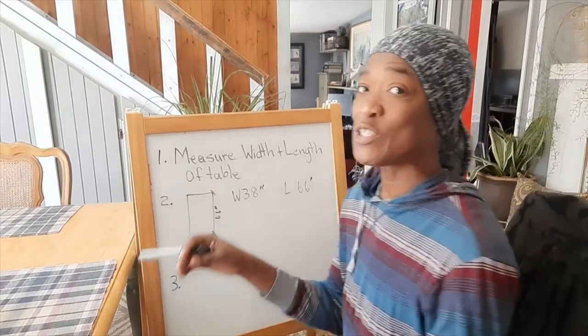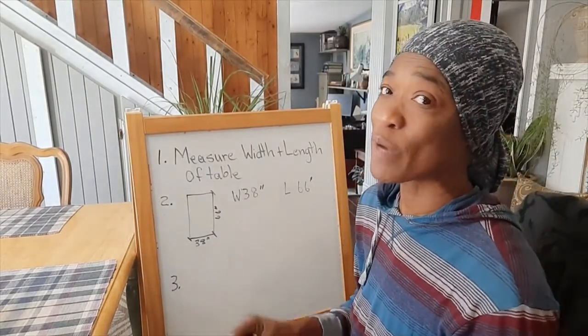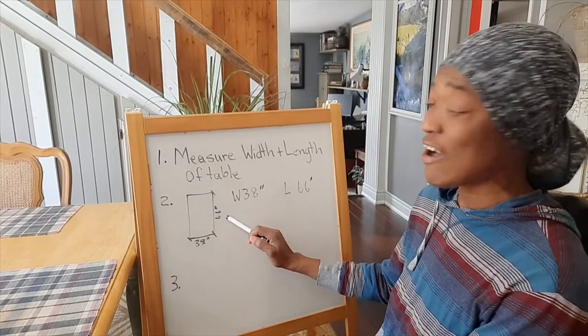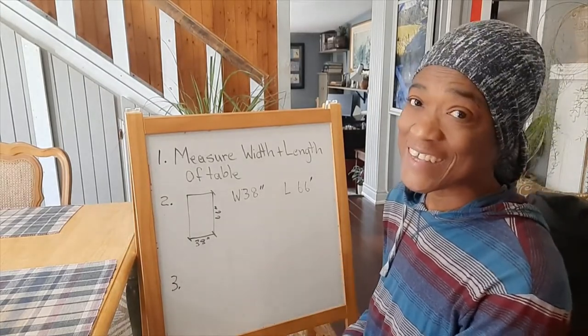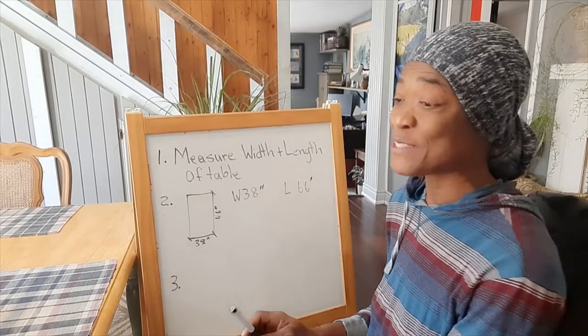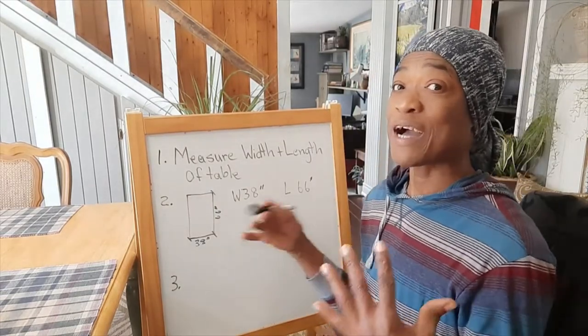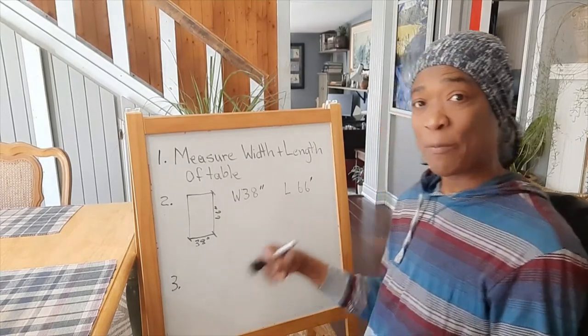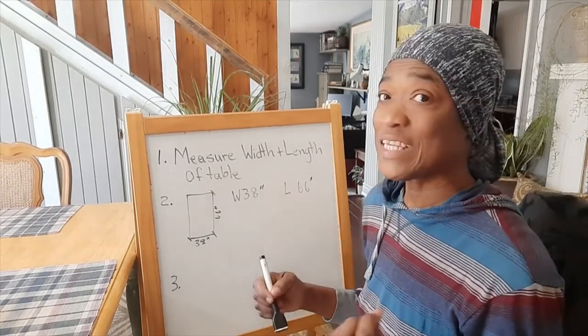I have measured my table, and it is 66 inches long and 38 inches wide. To accommodate for the chairs around your table when they're pulled out, we need to add increments to the measurements.